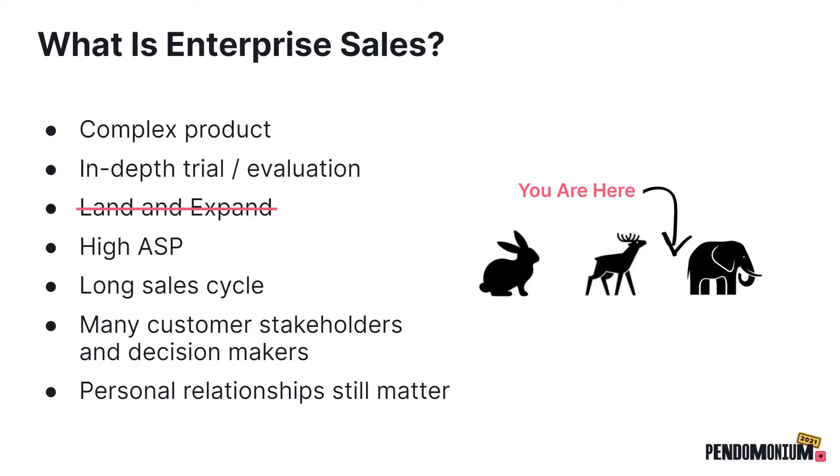If you've ever read Mark Suster's blog — a VC with a great startup lessons series — one of his posts talks about whether you're hunting rabbits, deer, or elephants. Enterprise sales is toward the elephant end of that scale: long sales cycles, high ASP with lots of stakeholders and approvers, and a process where personal relationships still matter a lot, because the decision-makers' reputations are on the line given the high visibility of the purchase.